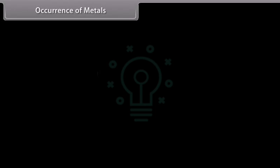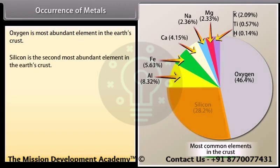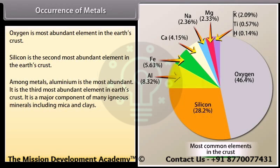Occurrence of metals. Oxygen is most abundant element in the earth's crust. Silicon is the second most abundant element in the earth's crust. Among metals, aluminium is the most abundant. It is the third most abundant element in earth's crust. It is a major component of many igneous minerals including mica and clay. Many gemstones are impure forms of Al2O3 and the impurities range from chromium to copper.